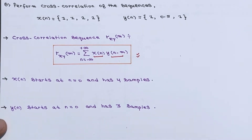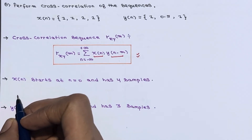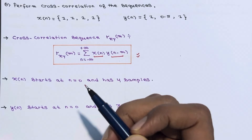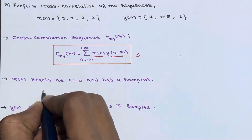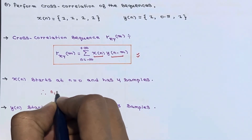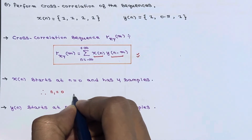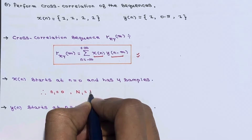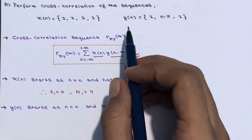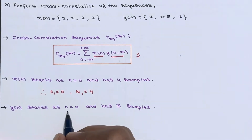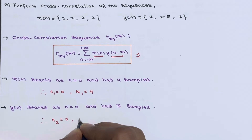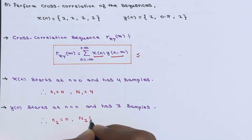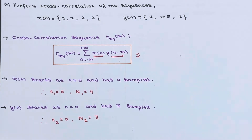If you look at x[n], it starts from n = 0 and has four samples, so n1 = 0 and N1 = 4. Now if you look at y[n], it also starts from n = 0 and has three samples, so n2 = 0 and N2 = 3.